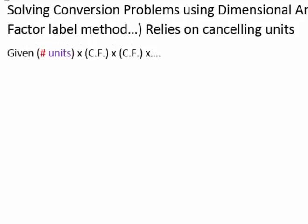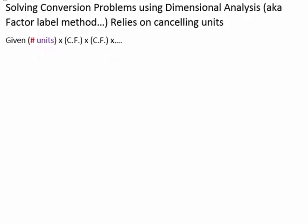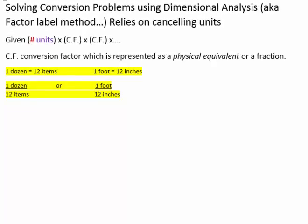The general setup for dimensional analysis is you begin with the number you want to convert from, or the given number with its units, and you multiply that number by one or more conversion factors. A conversion factor is a physical equivalent and can be represented as a fraction.